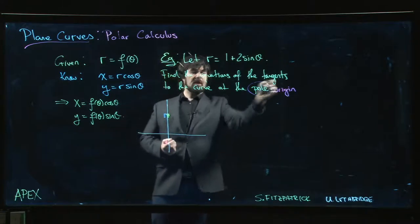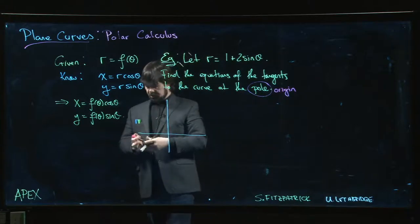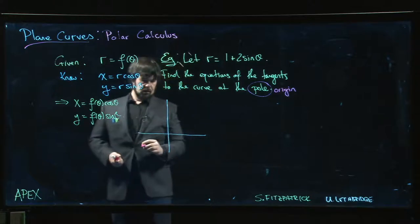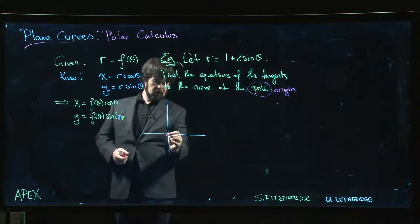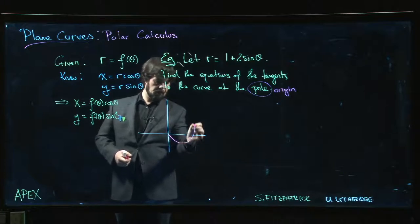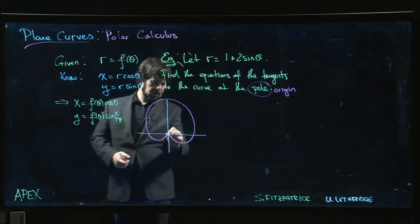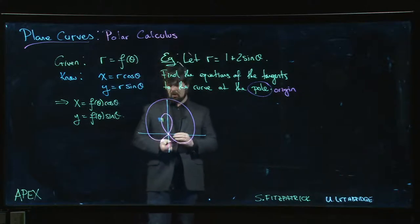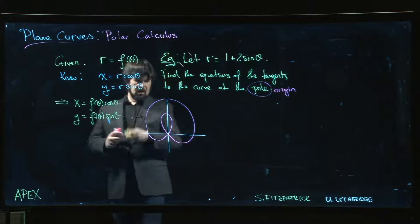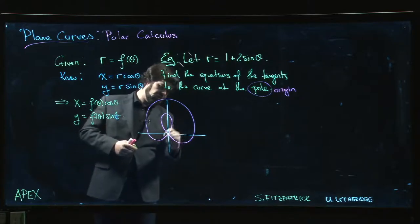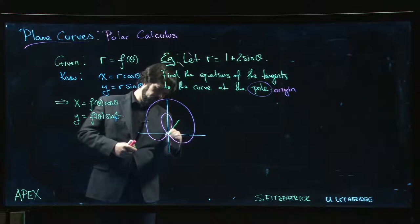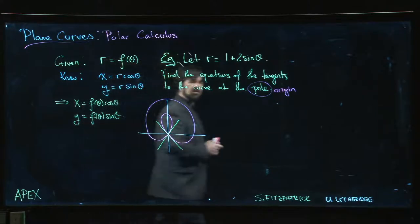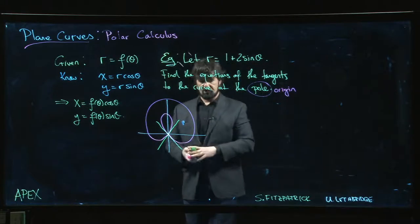Now notice it asks for tangents plural. That's because if you go ahead and plot this particular Limasson, you find that you get a curve which is something like this. Goes out, around, back, loops through, comes around. So we have a curve that looks something like that. And so you can see that there are indeed two tangent lines at the origin, one here and one there, because the curve passes through the origin more than once. It's a self-intersecting curve.